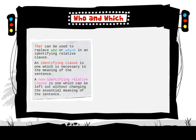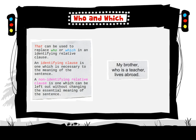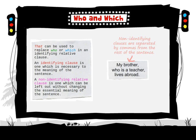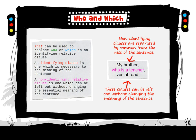A non-identifying relative clause is one which can be left out without changing the essential meaning of the sentence. For example: 'My brother, who is a teacher, lives abroad.' Non-identifying clauses are separated by commas from the rest of the sentence, and these clauses can be left out without changing the meaning.